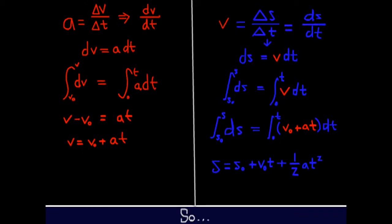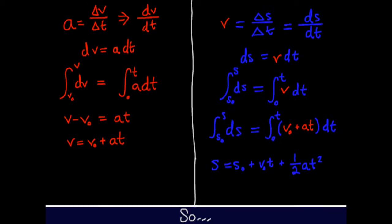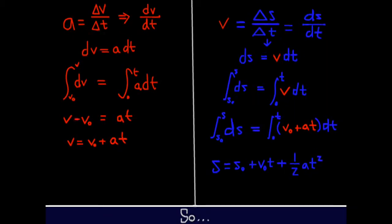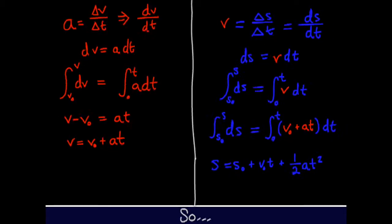Going a step even further, we can integrate velocity again and find that position is equal to the initial position plus the initial velocity times time plus one half times acceleration times t squared.